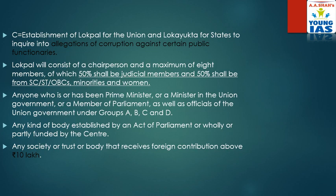Now the explanation. Establishment of Lokpal for the Union and Lokayukta for states, to inquire into allegations of corruption against central public functionaries. Lokpal will consist of a chairperson and a maximum of 8 members. Of these, 50% will be from judicial members and 50% will be from SC/ST, OBC, minorities and women. Any kind of body established by an act of Parliament or wholly or partly funded by the Centre, and any society or trust or body that receives foreign contribution above 10 lakh, comes under the jurisdiction of Lokpal.